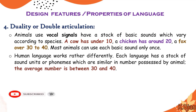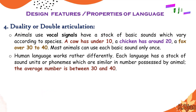In humans this case is totally different. Human language works rather differently — each language has a stock of sound units, or phonemes, which are similar in number to those possessed by animals. The average number is between 30 and 40. So double articulation, or duality, means that humans use around 30 to 40 phonemes, and this is one of the key properties or design features of language.